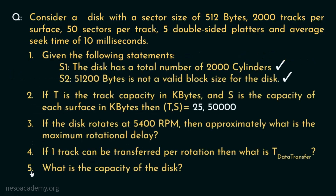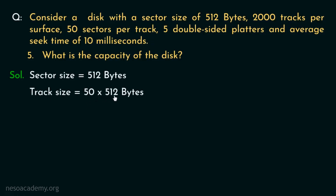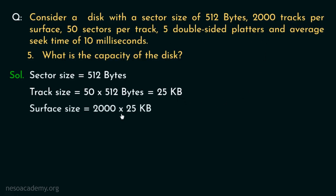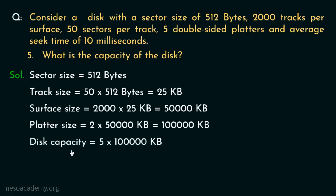Finally, question 5: what is the total capacity of the disk? The track size is 50 × 512 = 25 kilobytes. With 2000 tracks per surface, the surface size is 2000 × 25 = 50,000 kilobytes. Since the platters are double-sided, each platter is 2 × 50,000 = 1,00,000 kilobytes. With 5 such platters, the total disk capacity is 5 × 1,00,000 = 5,00,000 kilobytes.